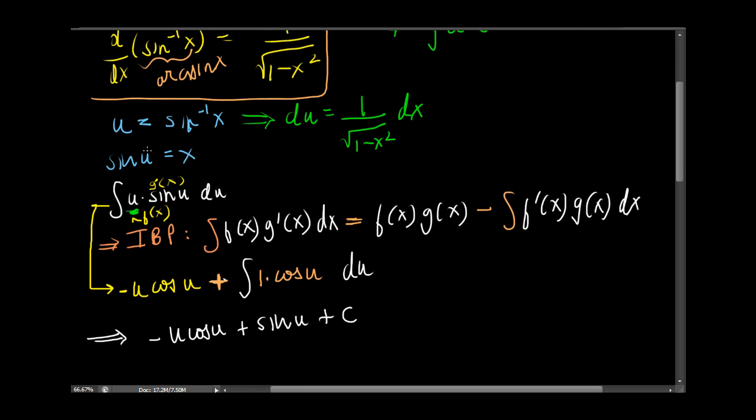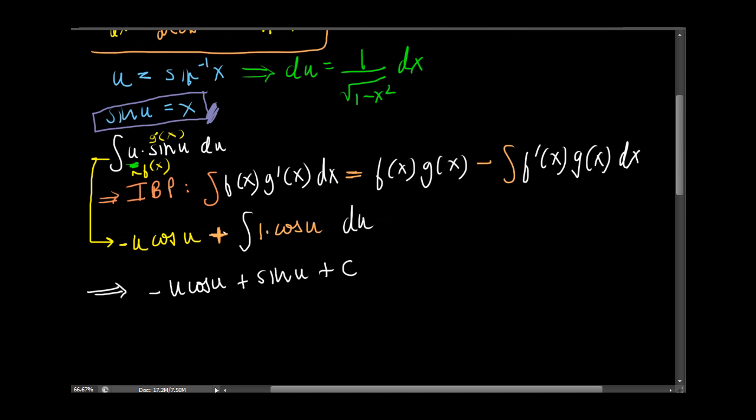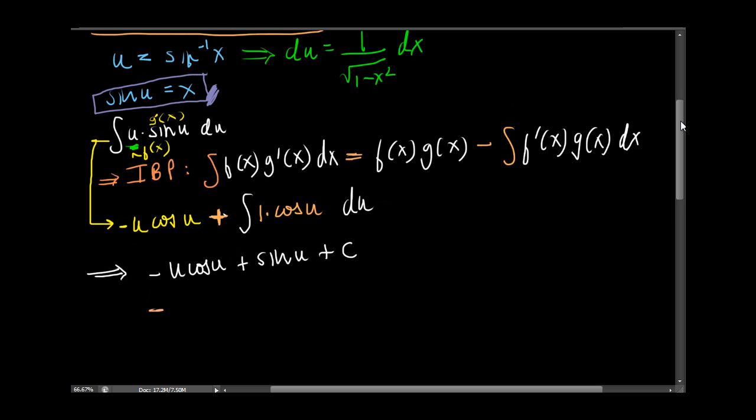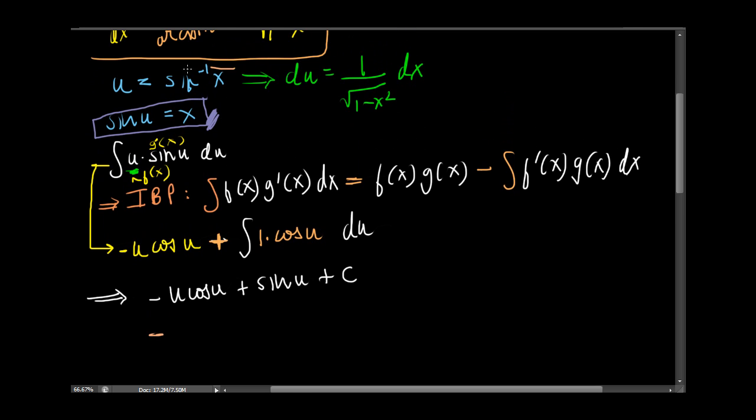So we'll use what we had substituted before to make this negative u. U is what? Sine inverse of x. U is sine inverse of x. So this is sine inverse of x times